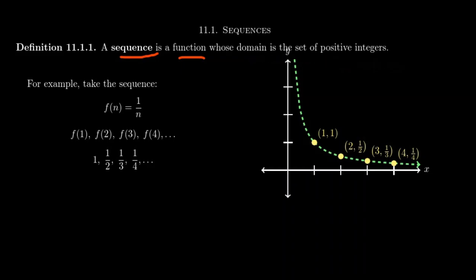Take as an example the following sequence. We're going to take the function f of n given by 1 over n, but we only allow positive integers for our domain. So this function is defined at f of 1, f of 2, f of 3, f of 4, etc.